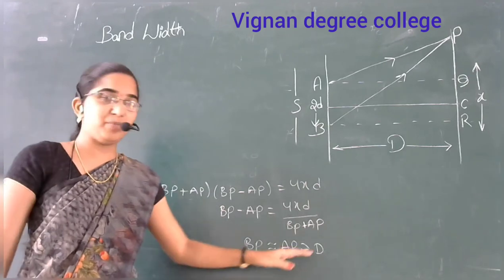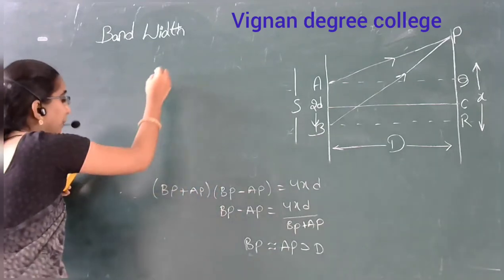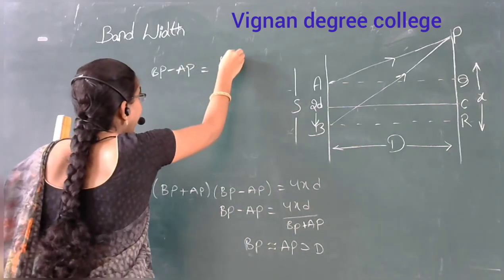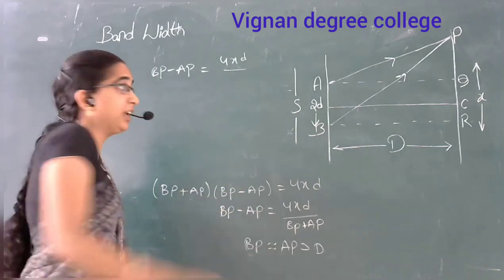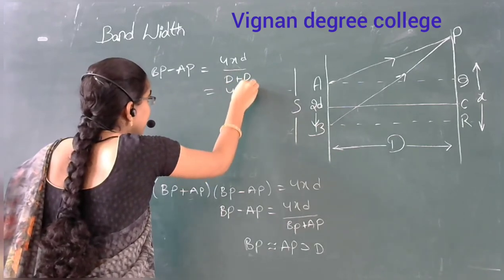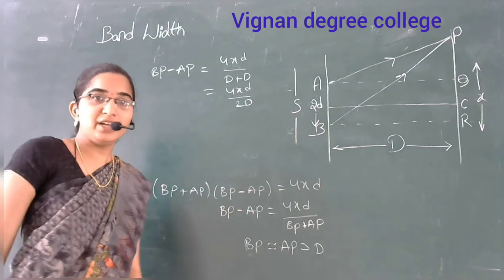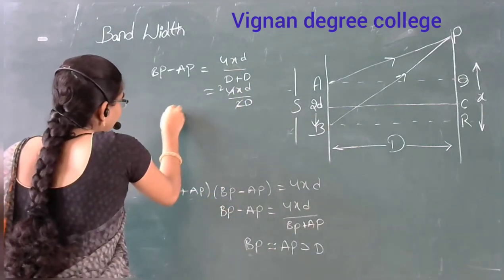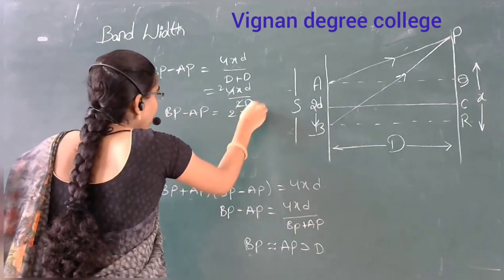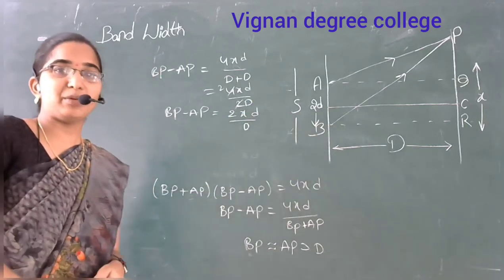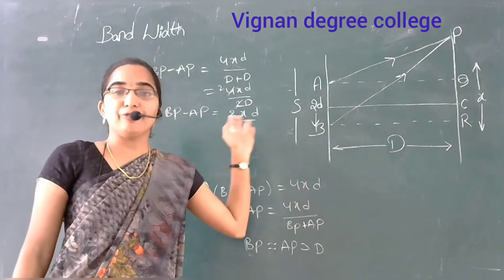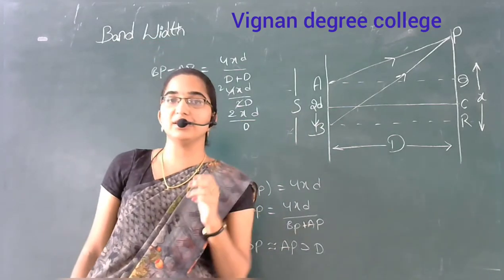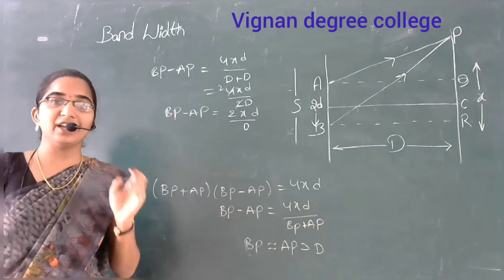Since BP is equal to AP equal to D, applying this: BP minus AP equals 4xd divided by (D plus D) equals 4xd divided by 2D. So the path difference is 2xd by capital D. This is the path difference for reaching point P. Now we make two cases: Case 1 is bright fringe, and Case 2 is dark fringe.